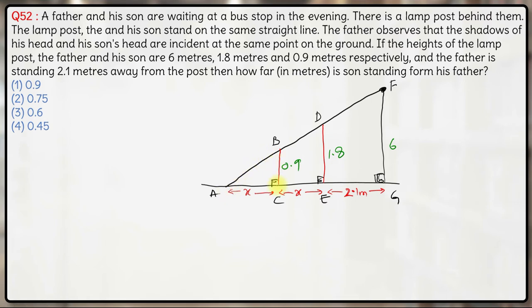So now if you look at triangle ABC and AFG, these would be similar triangles. Since these are similar triangles...